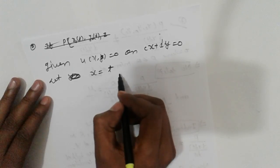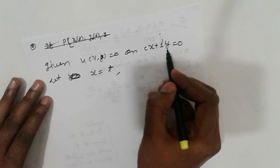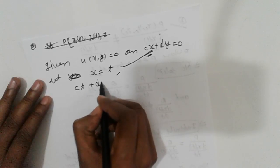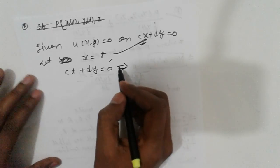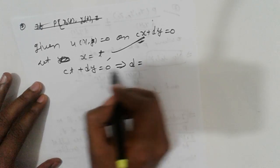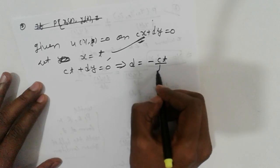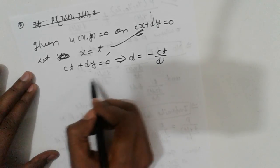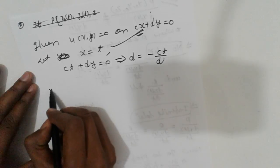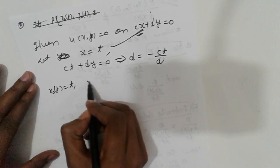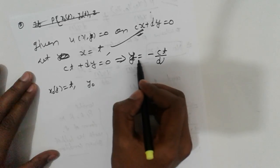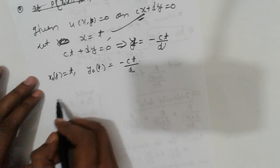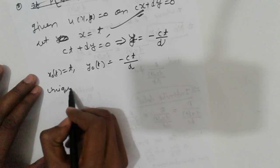Let x equal to t. Then from the boundary condition c·t + d·y = 0, simplifying we get y = minus c·t upon d. So x₀(t) = t and y₀(t) = minus c·t / d. Now apply the uniqueness condition.